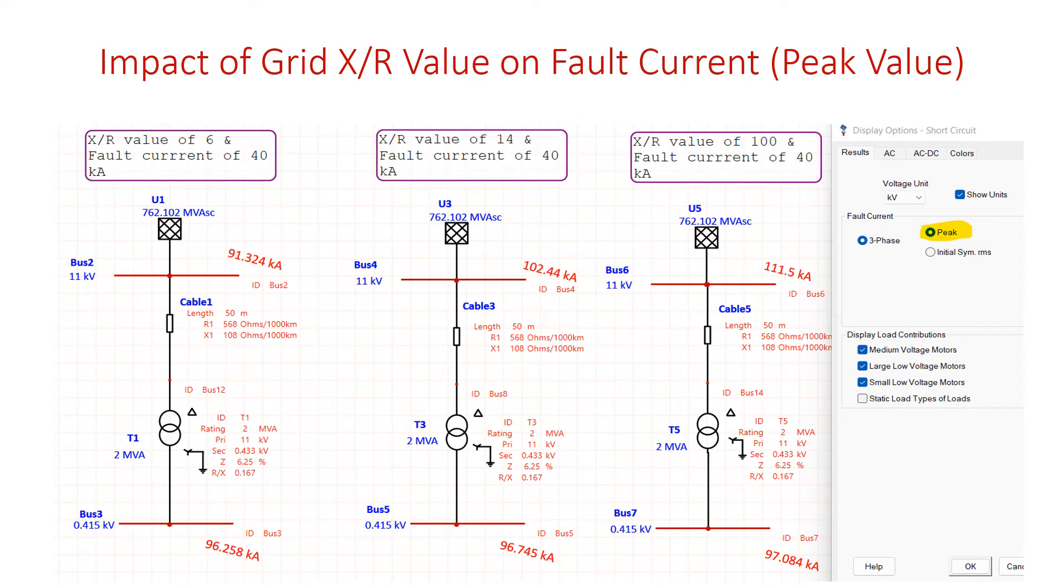Now, I am taking the same ETAP model, X by R ratio of 6, 14 and 100. Instead of displaying initial symmetrical RMS value, peak value is displayed here. Have a look at the peak value at bus number 2 on the first model, 91.324 kilo amps. On bus number 4, middle ETAP model, which is 102.44. And bus number 6 on my right hand side ETAP model, it is 111.5 kilo amps.